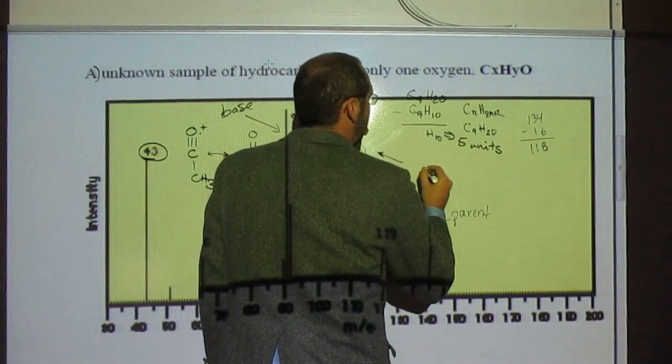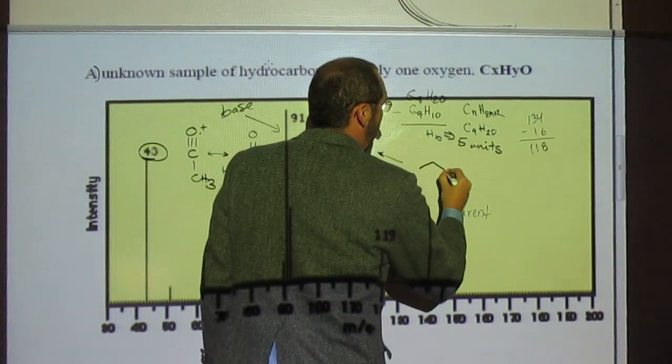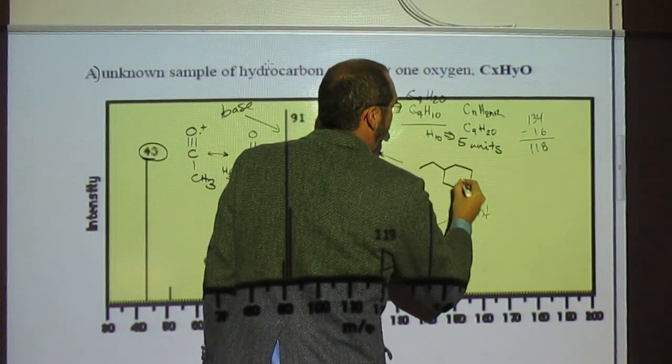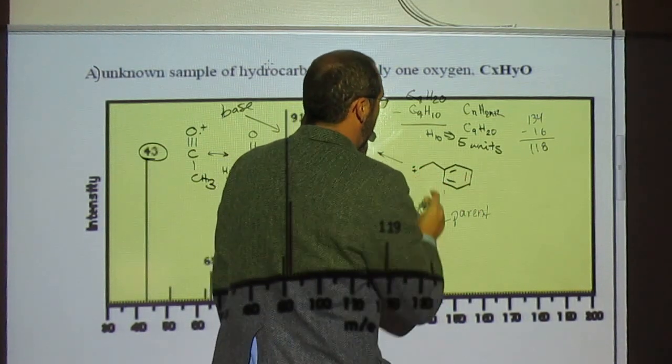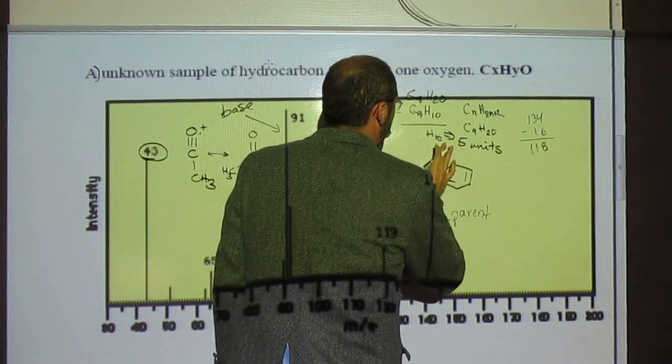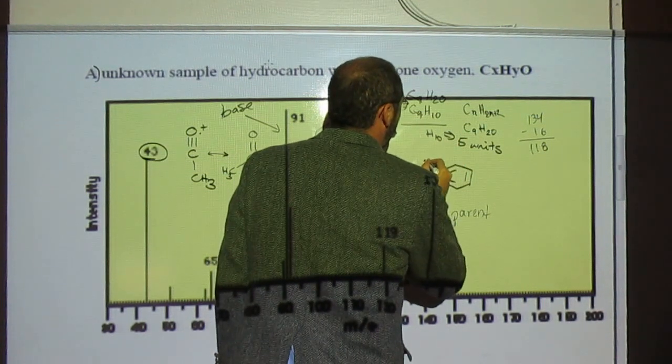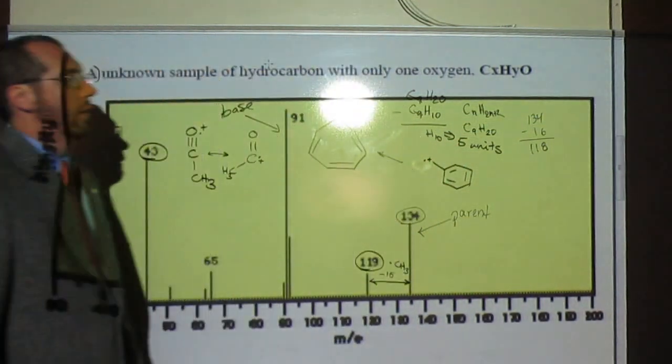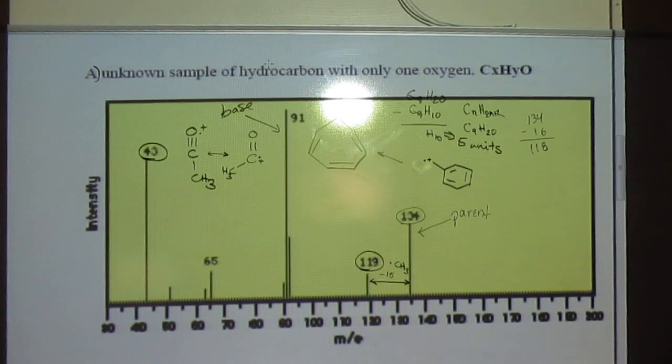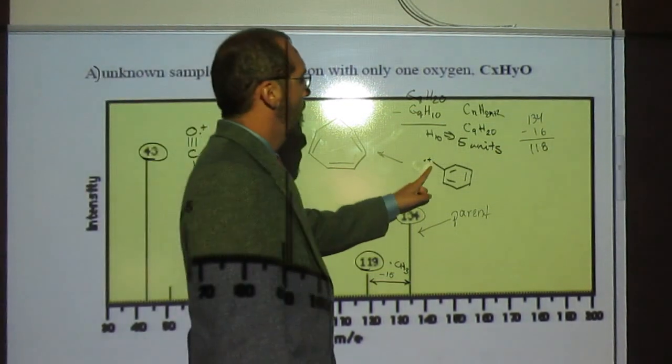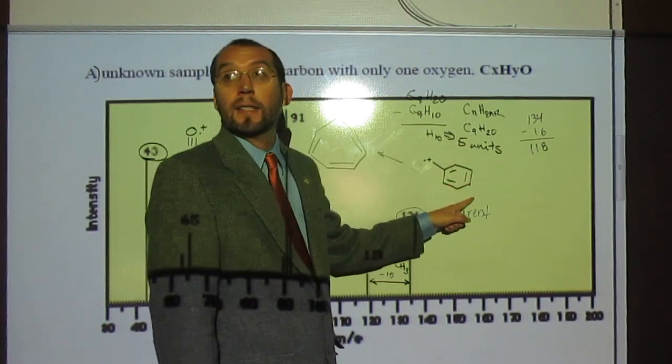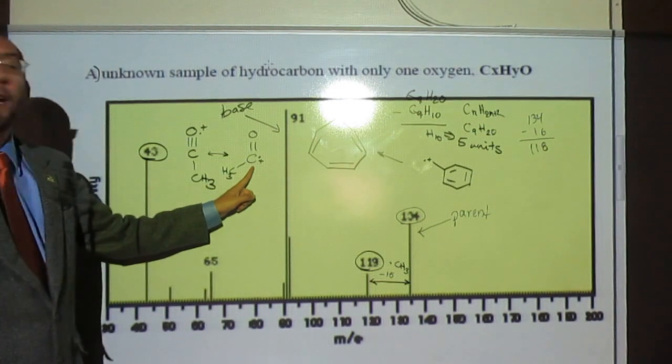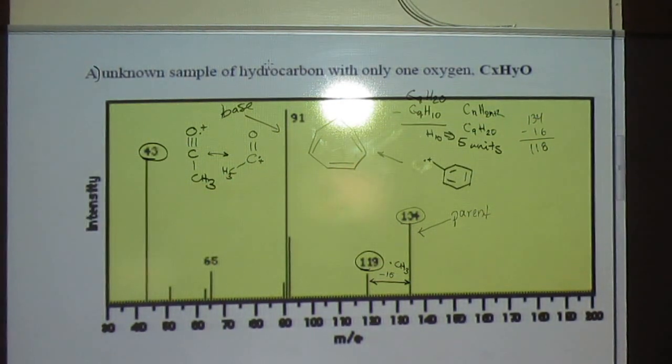And then this one, what did we say? The acylium ion came from the benzyl group, right? Okay. Okay? So 1, 2, 3, 4, 5, 6, 7, 8, 9. Okay?